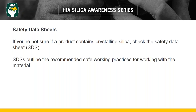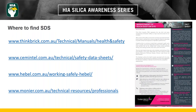If you're not sure if a product contains crystalline silica, check the safety data sheets. Safety data sheets outline the recommended safe work practices for working with the material, including cutting practices, cleanup, handling, and other guidance. A number of manufacturers have also been updating their safety data sheets to include information specifically about silica. A cross section of these with links is shown on this slide.